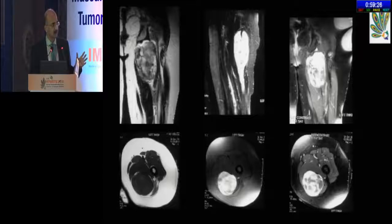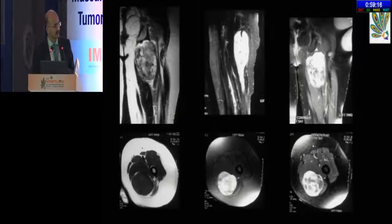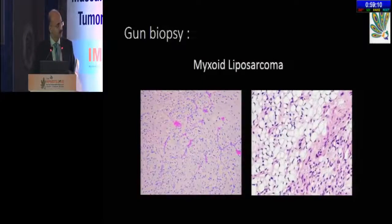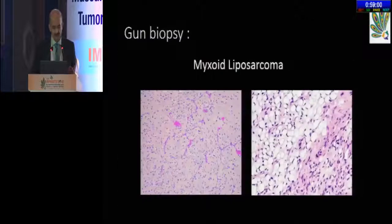Clinically, she had about 8 by 6 by 5 centimeters mass in the deep posterior aspect of the upper thigh. The MRI showed this picture. X-ray did not reveal any calcification. The gun biopsy was of a myxoid liposarcoma. The MRI confirmed a deeply located tumor with a size of about 10 by 6 by 5 centimeters.